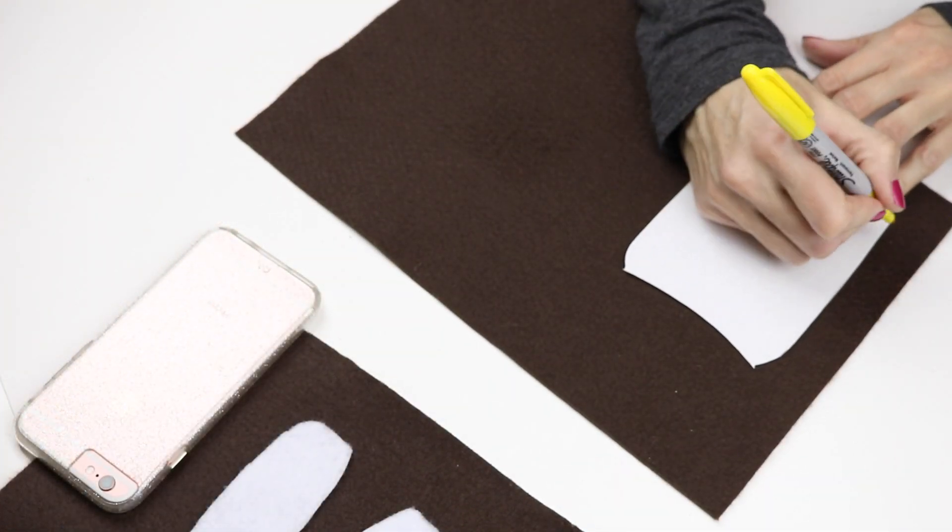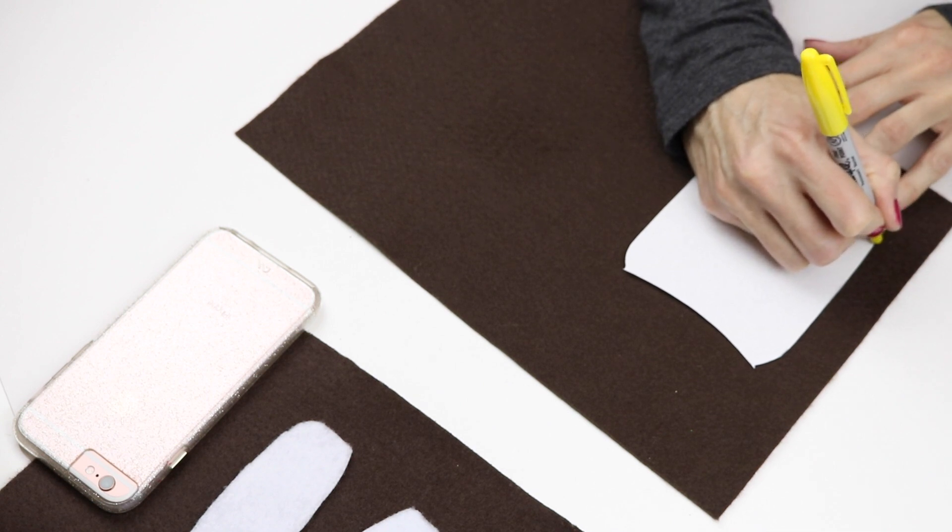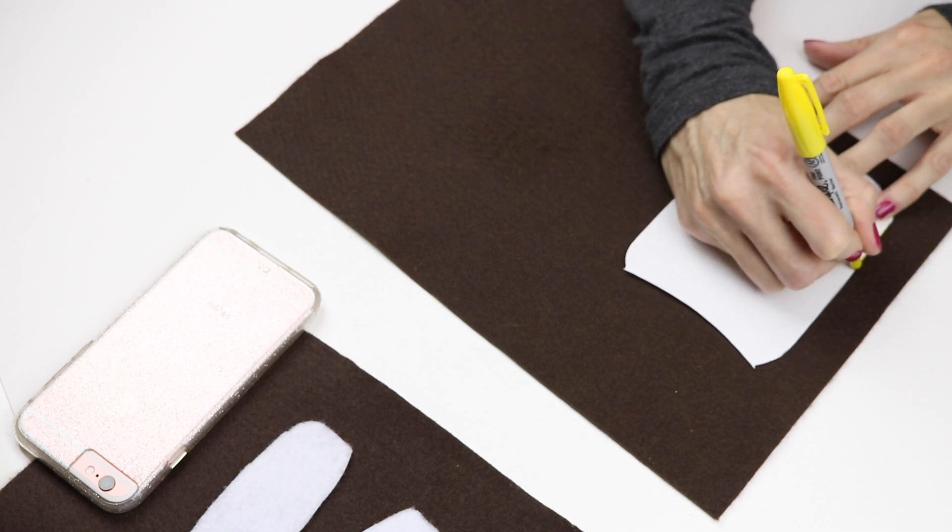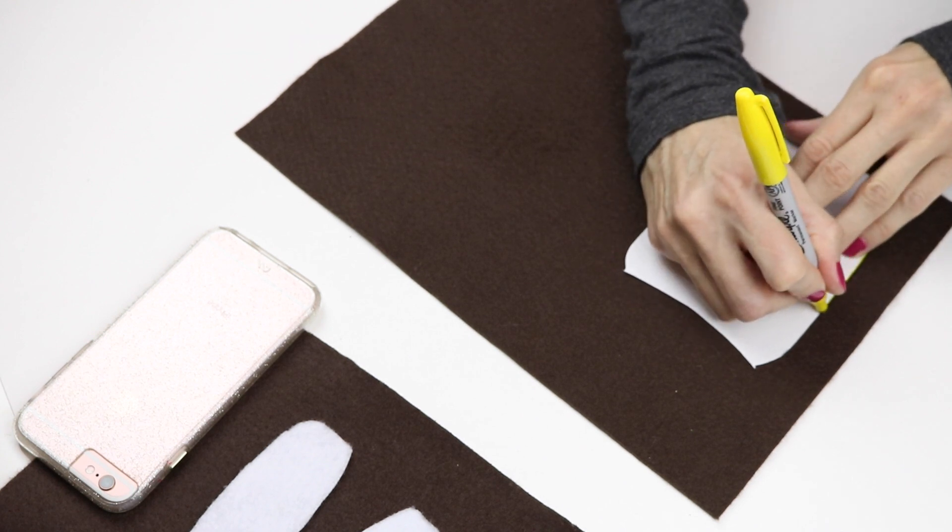Then I traced out the bottom of the jar onto a piece of brown felt, folded that in half and cut it out so I could have two pieces.